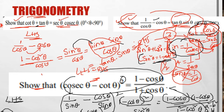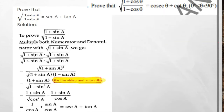Moving on to the next problem. This is one of the expected questions: prove that √((1 + sin θ)/(1 − sin θ)) = sec θ + tan θ. For this type of root problem, we use rationalization. Rationalization means multiplying by the same terms with the opposite sign in the denominator, i.e., multiply by (1 + sin θ)/(1 + sin θ).